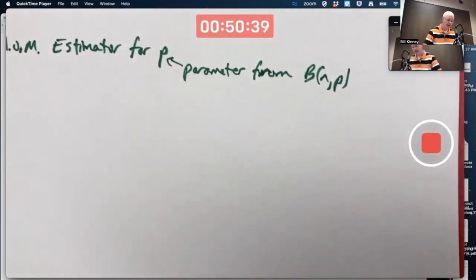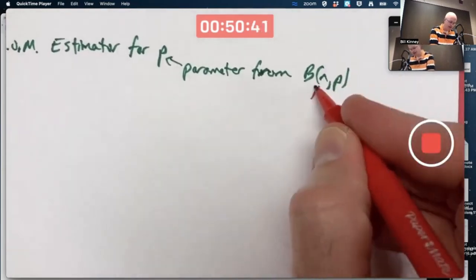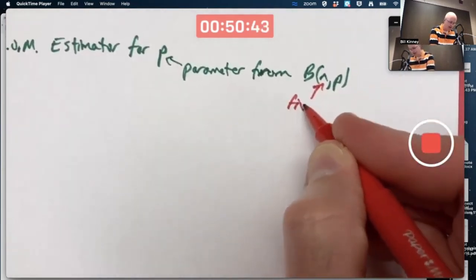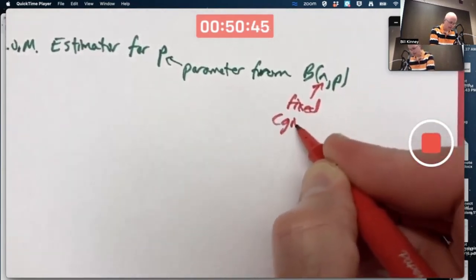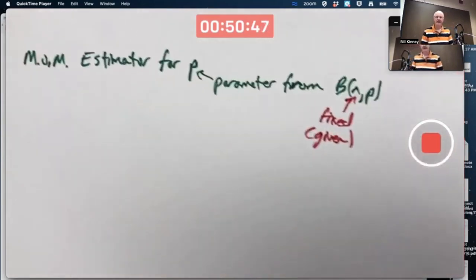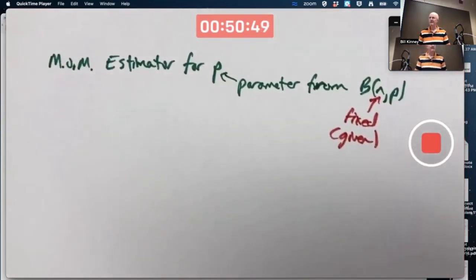In general, has two parameters. Think of the N as fixed or given. And you're interested in estimating P, the probability of success, like for free throws.